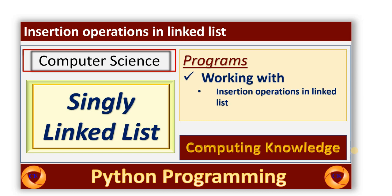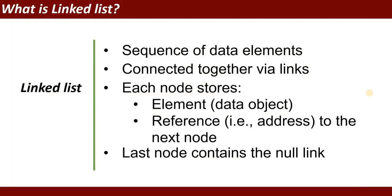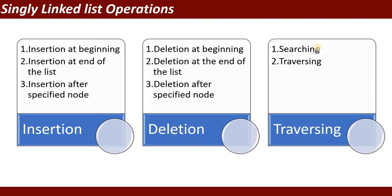In this video session I will explain how to use insertion operation in a singly linked list. As we know, a linked list is a sequence of data elements connected together via links. Each node stores an element and a reference or link to the next node, and the last node contains the null link. Singly linked list insertion can be done in three ways.